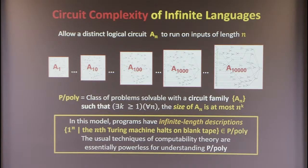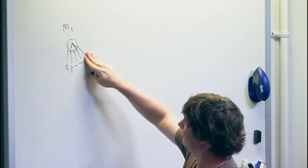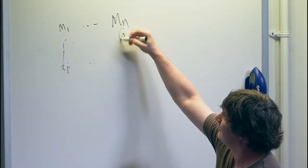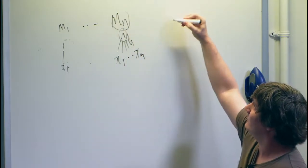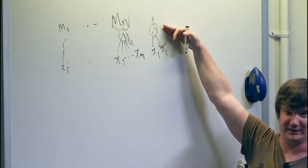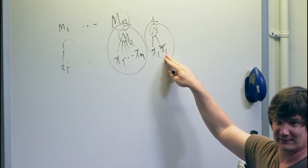Nevertheless, this undecidable problem is in P/poly. For every input length n, there are two possibilities for the function restricted to n-bit inputs: it's either all zeros (accepts nothing) or it accepts the string of n ones. So if the nth Turing machine halted on blank tape, my nth circuit just takes the AND of n ones; if it didn't halt, the circuit outputs x1 AND NOT x1, which always outputs 0. Both circuits are of polynomial size, so the thing is in P/poly.